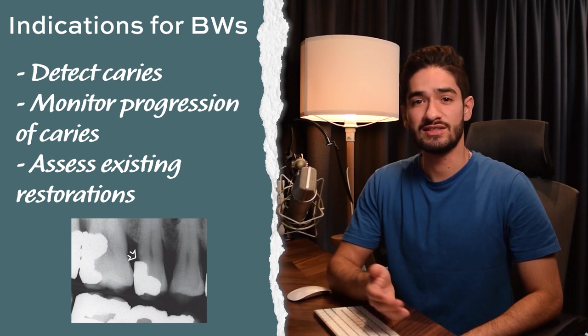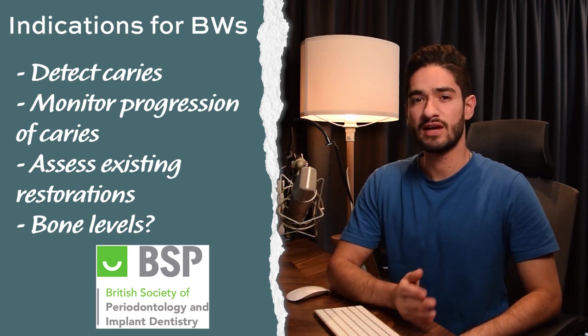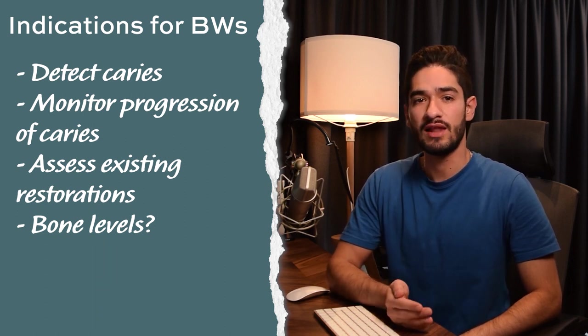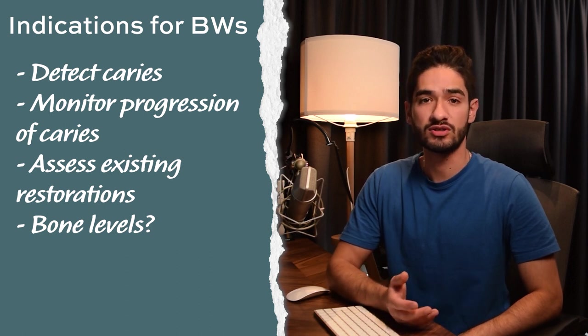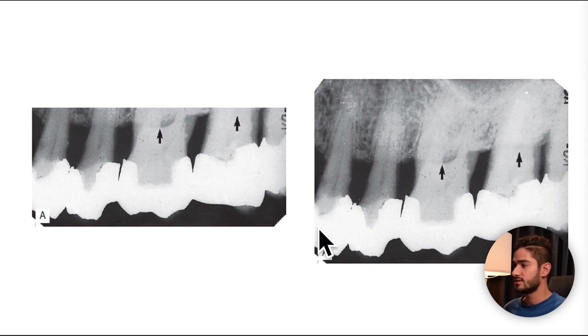Some would say you can use bite wings to assess bone levels, and to a certain extent you can, but according to the guidelines you won't be able to form a proper periodontal diagnosis from them, because you can't see the full length of the root to determine what percent of bone loss there is. For example, on a bite wing you might think there's 40 to 50 percent bone loss, but on a full PA you can see the tooth has very long roots so it's actually more like 30 percent — potentially the difference between staging it as stage 3 or stage 2. Whether that's worth taking a periapical is something you need to decide as a dentist.